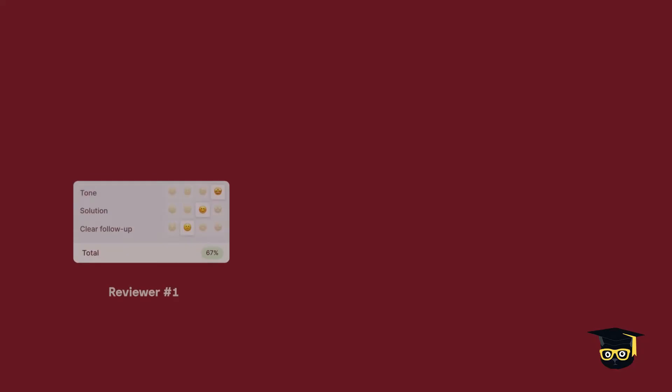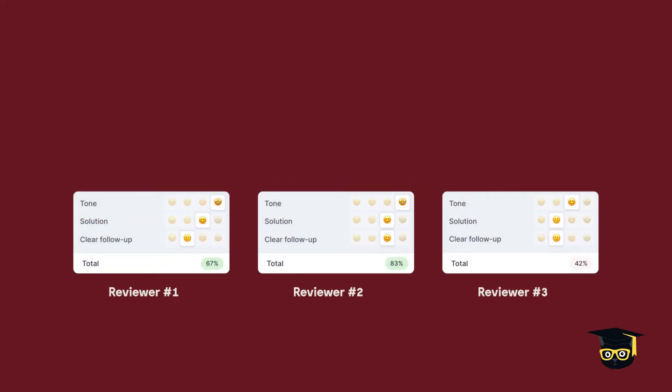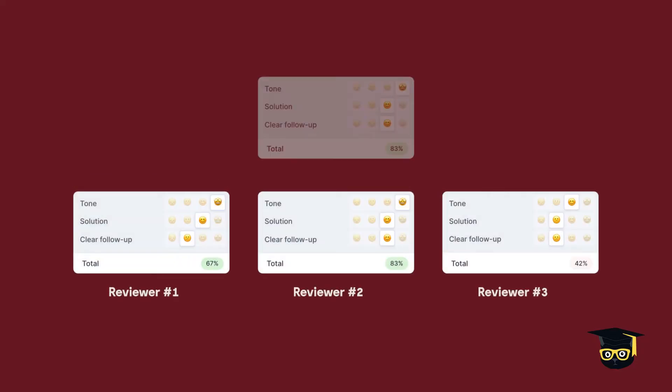We've covered how to hold calibration sessions and how frequently you should have them, but what do you actually do with the results? If you have conducted a blind calibration session, then you can compare the benchmark scores to how your reviewers originally scored them. If a reviewer is outside of the benchmark score, then schedule a follow-up meeting or review session to help them align with their scoring.